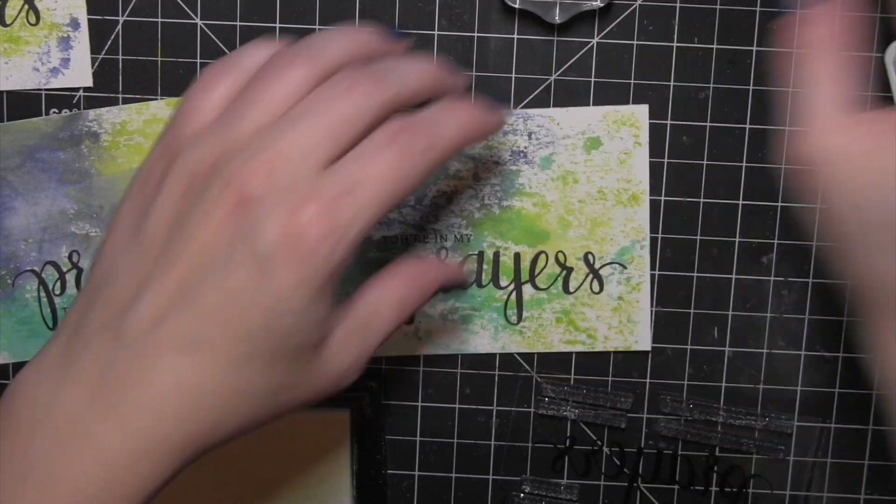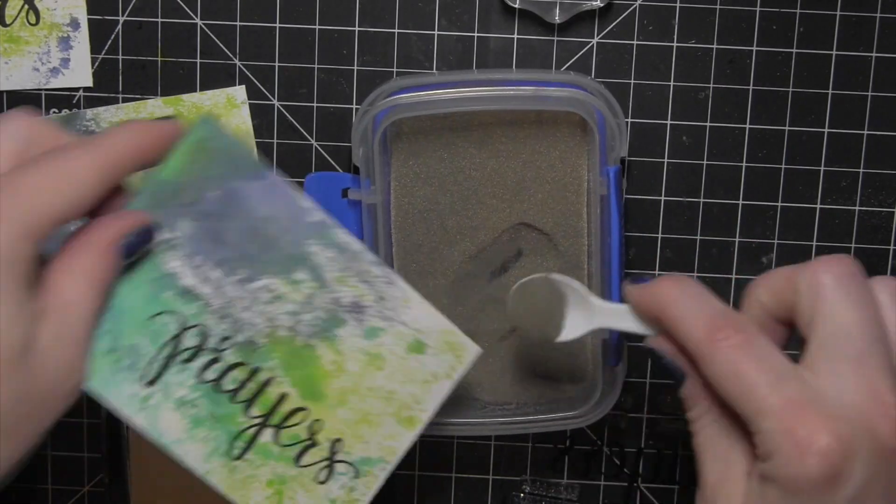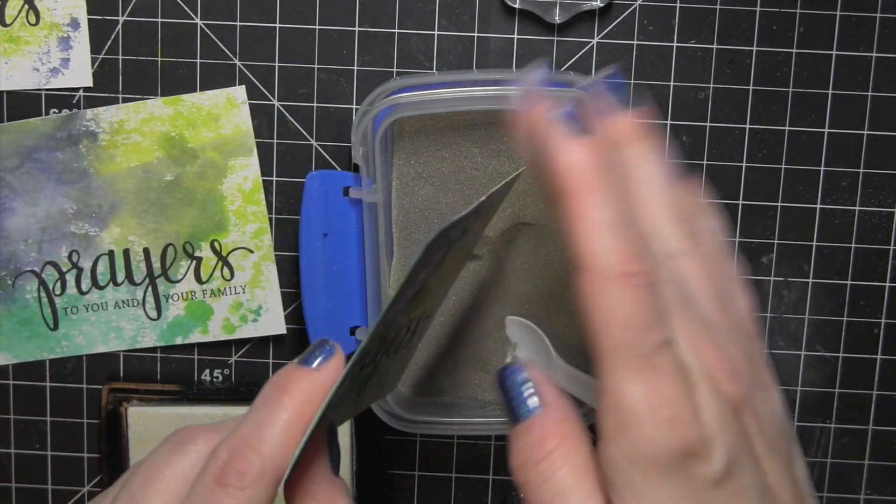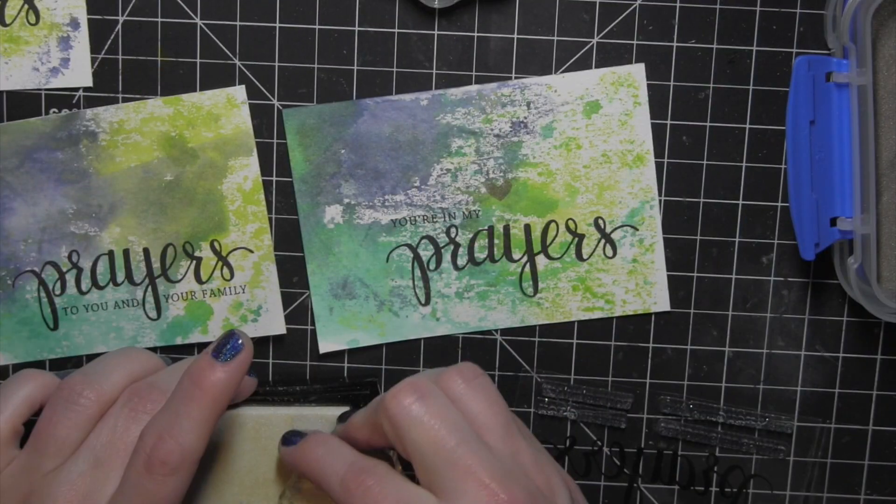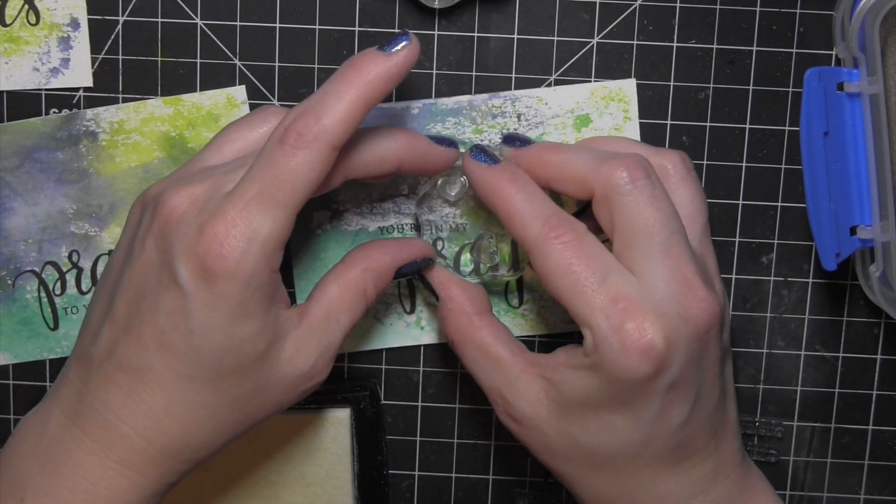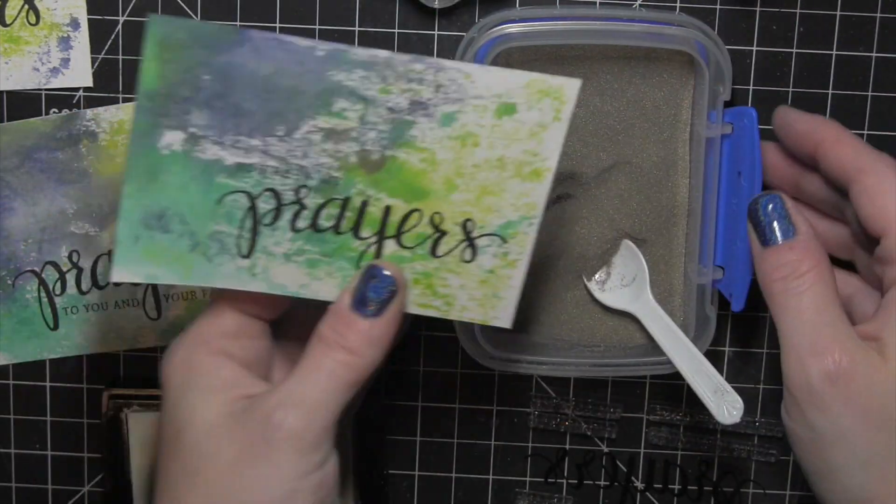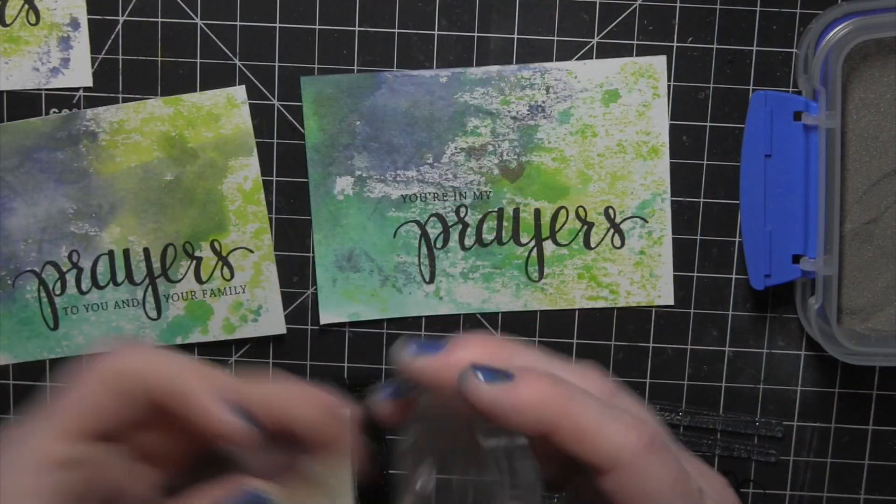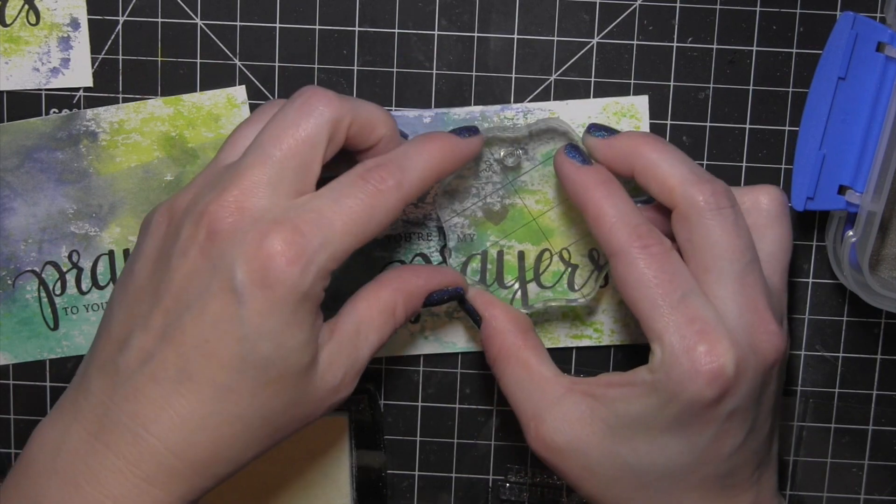And I'm going to be heat embossing all of these with the Ranger Liquid Platinum Embossing Powder. I thought it would look really nice with the colors of the background. It gives it a really nice kind of elegant look. I'm going to add the embossing powder after I stamp each heart just so that I can see where I have been exactly. And that way I don't accidentally stamp one heart over another.